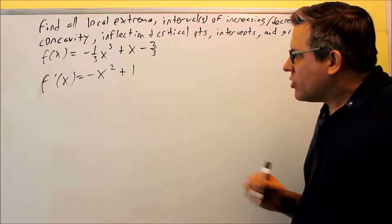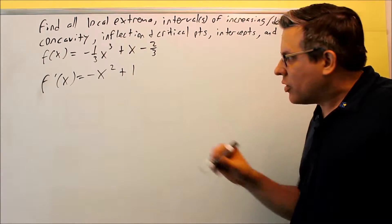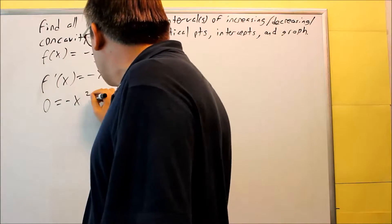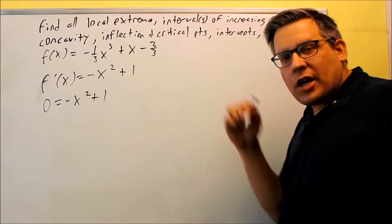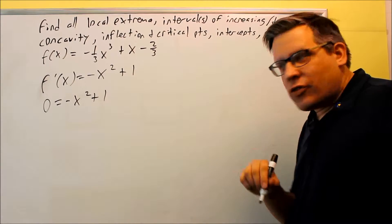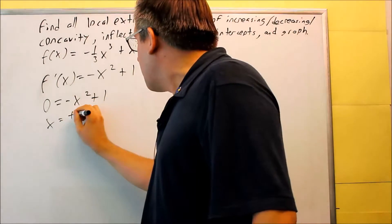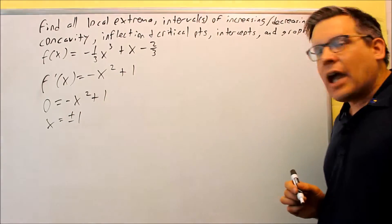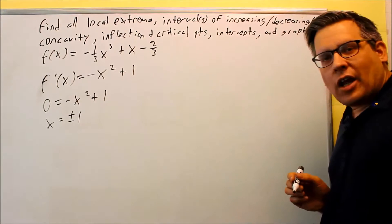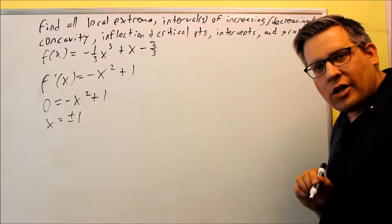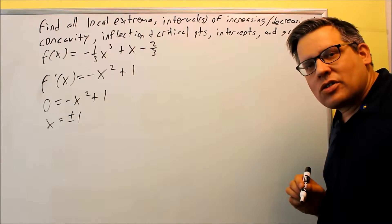We want to set it equal to zero. This is not going to be undefined anywhere because it's a polynomial, so we set it equal to zero to find the critical points. When we do that, we have 1 minus x squared. You can factor it using difference of squares, and either way you're going to get plus or minus 1 as the two critical numbers.